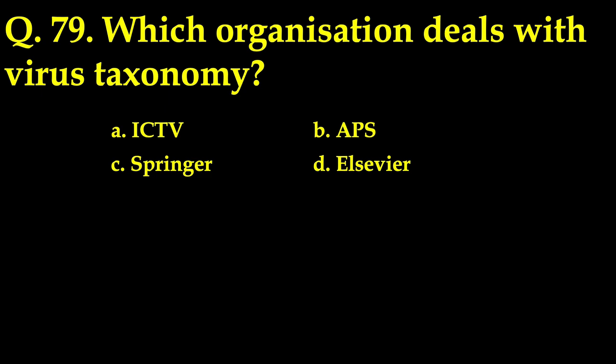The next question: which organization deals with virus taxonomy? There were four options — ICTV, APS, Springer, and LJVR — and the correct answer is ICTV, the International Committee on Taxonomy of Viruses. ICTV authorizes and organizes the taxonomy, classification, and nomenclature for viruses. It has developed a universal taxonomic scheme for viruses to describe, name, and classify every virus that affects living organisms. ICTV is governed by the Virology Division of the International Union of Microbiological Societies.